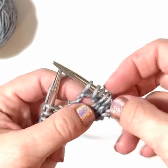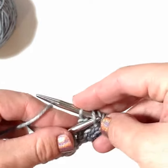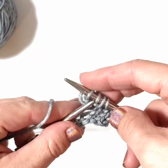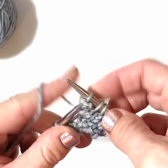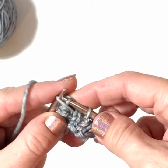So we've now got four stitches on the right hand needle where we used to have one. You are then going to bind off three of those four stitches. So the second, third, and fourth stitches you're bringing over the first.